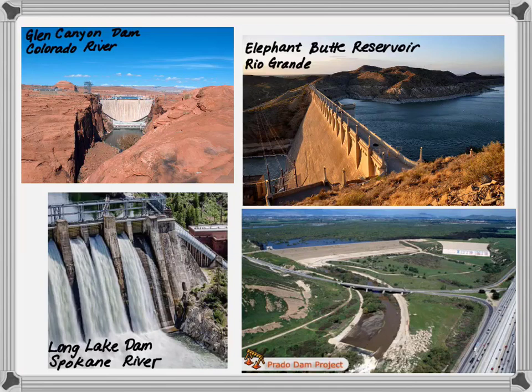Long Lake Dam was built in 1915 to supply power. Prado Dam, which is located in our own backyard in Chino Hills, California, is fed by flows from the Santa Ana River. Its primary purpose, when built in 1941, was flood control.